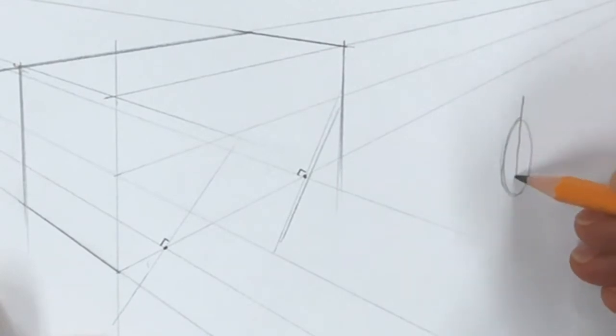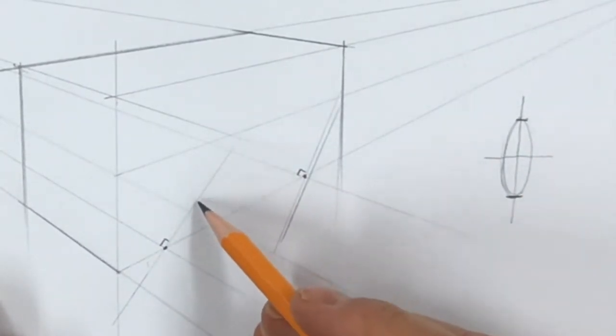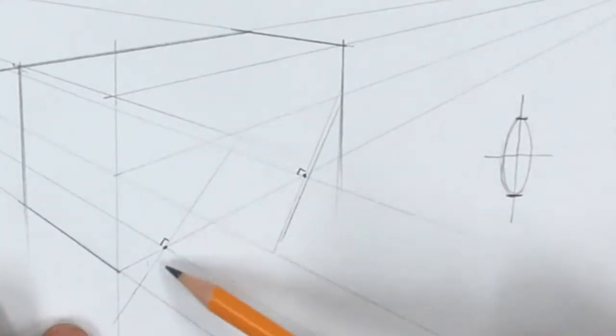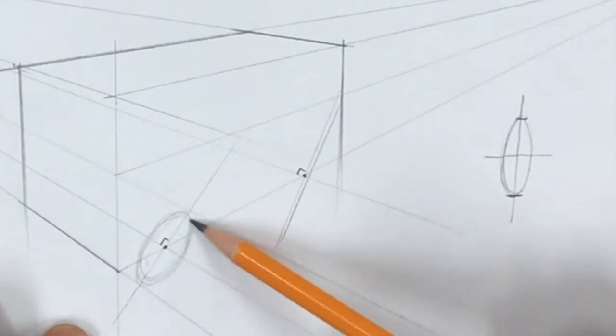In this case, the major axis, in other words the longest part of the ellipse, will be going along that 90-degree line that I just drew. You have to kind of eyeball it to make sure you get the width correct. I'm just going to make that really light to start with.